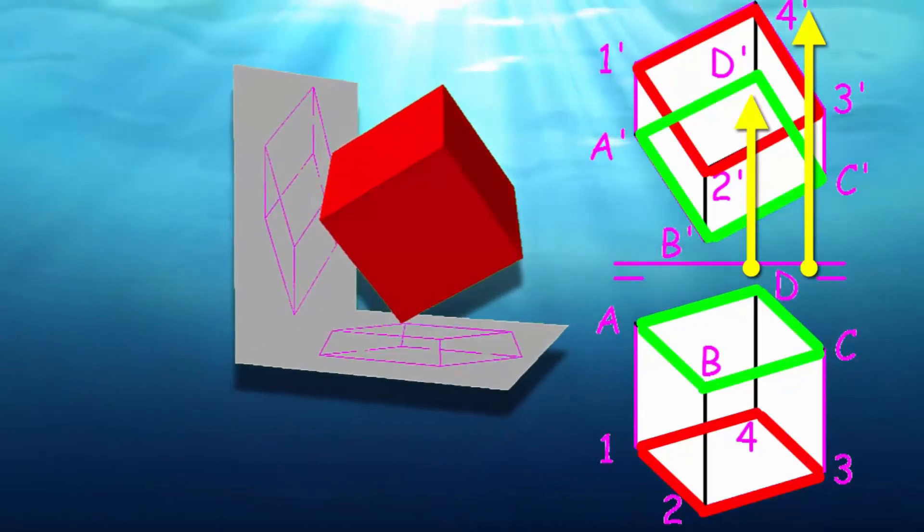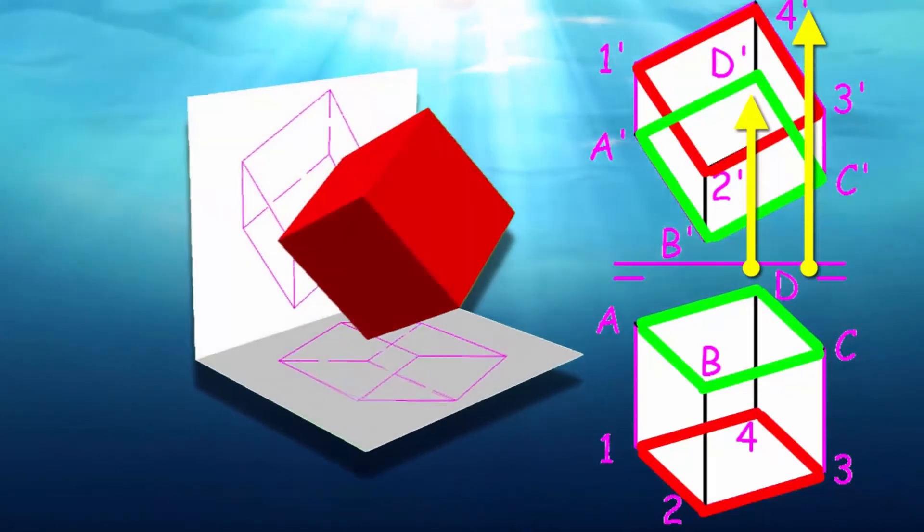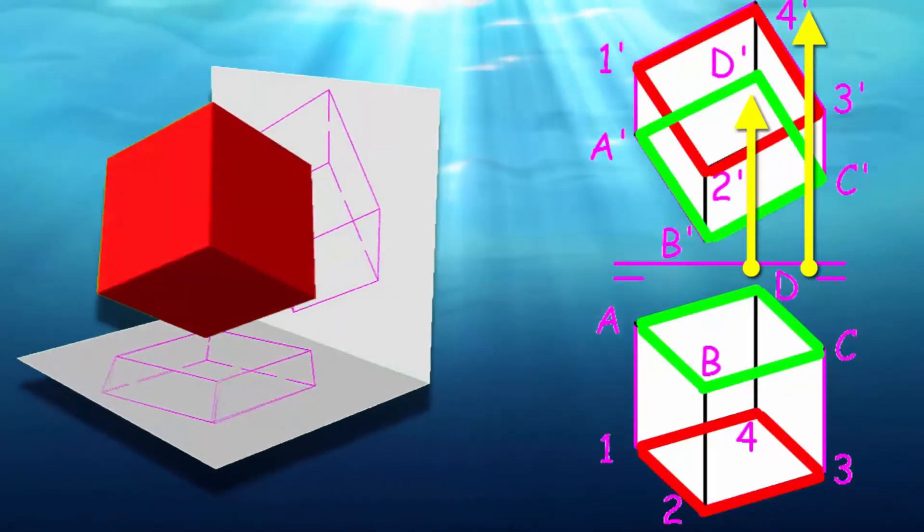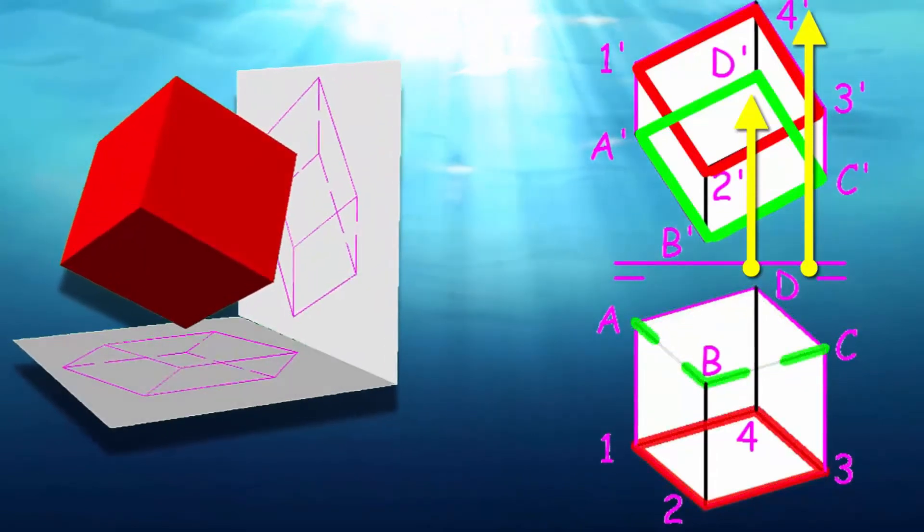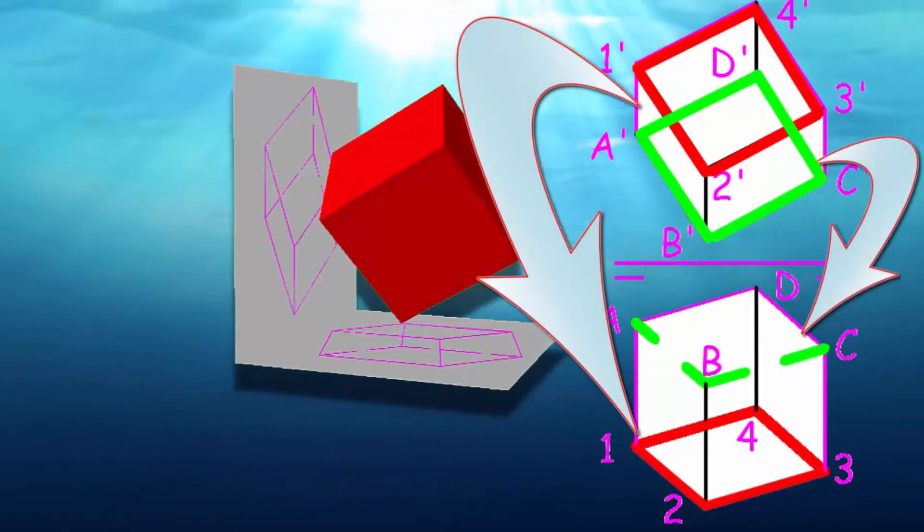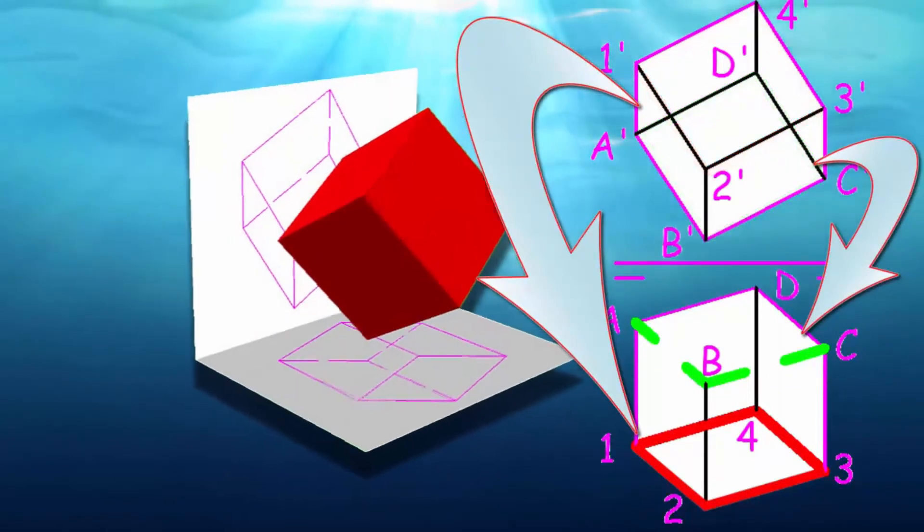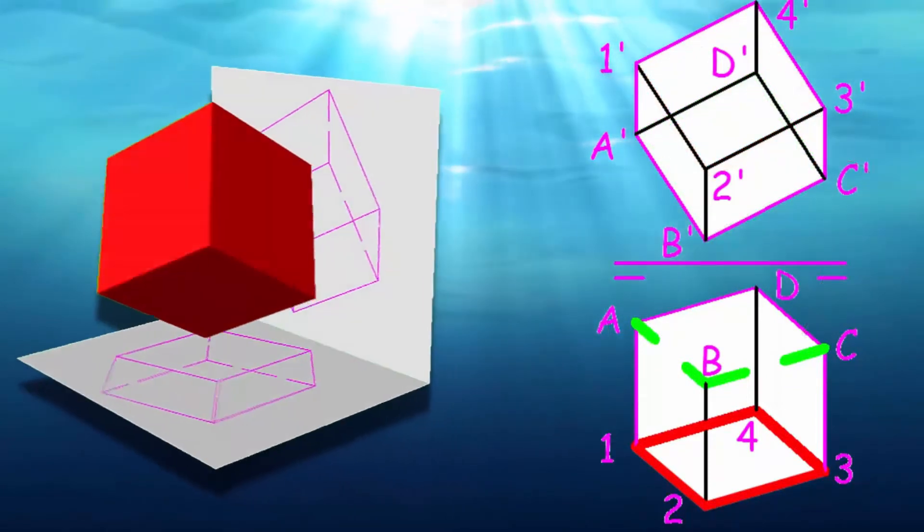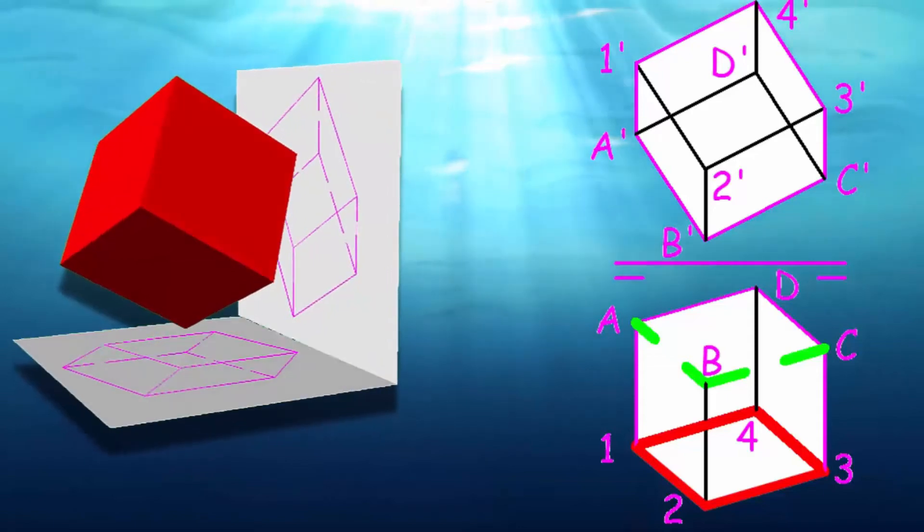As 4 has greater dimension than D, the face containing 4, i.e., 1234, is seen in the top view, and the opposite will be hidden. Remember that if a face is the opposite view, it can never be seen; it will always be the opposite.